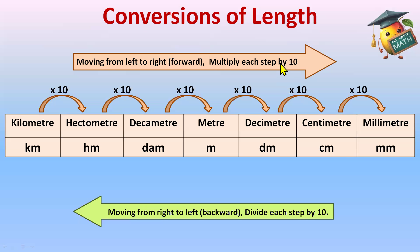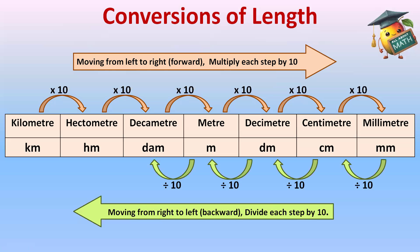Moving backward means you're converting millimeter to centimeter — you'll divide each step by 10. Like centimeter to decimeter, divided by 10. Each step moving backward, that is right to left, you are dividing by 10. So, forward or left to right: multiply each step by 10. And backward or right to left: divide by 10 each step.